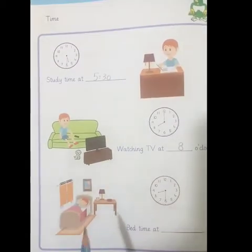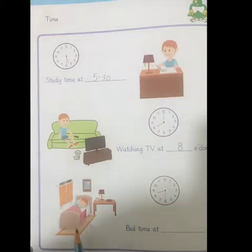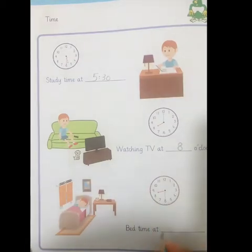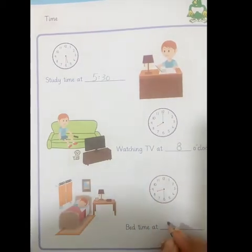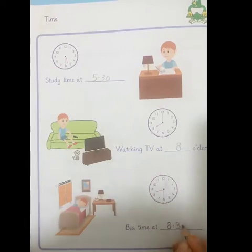The next one is bedtime. Ab iska bedtime kya hai class? It's 8:30. To hum yaha kya likhenge? 8:30, like this.